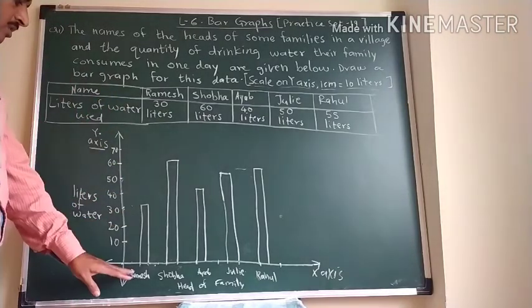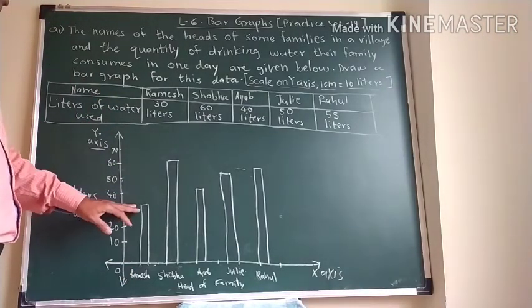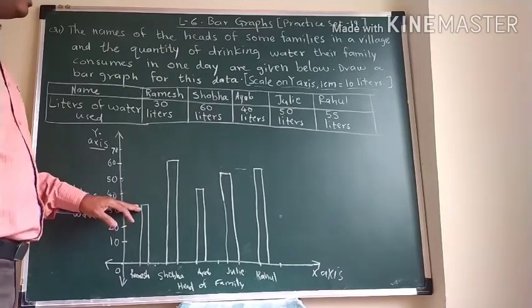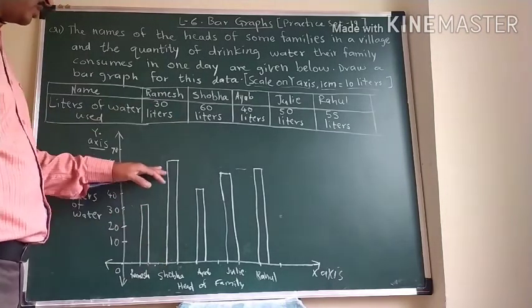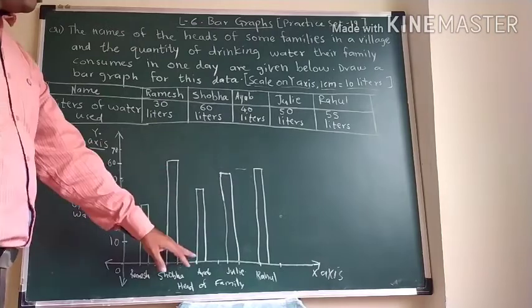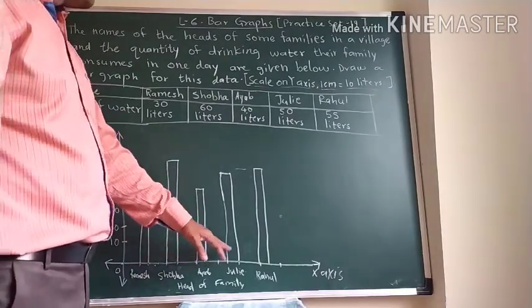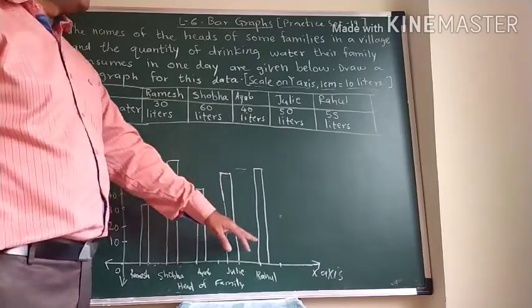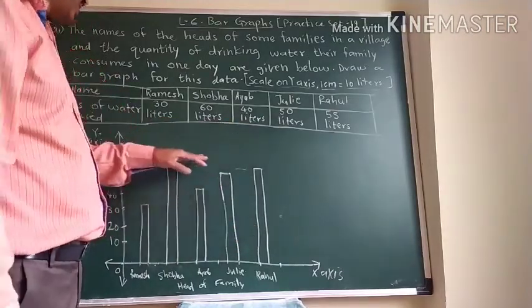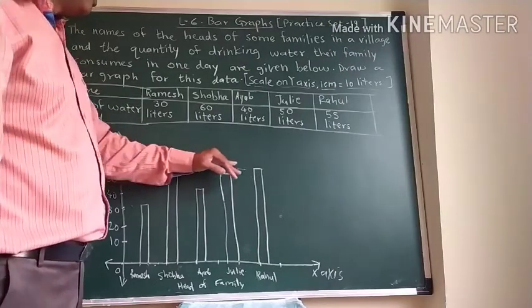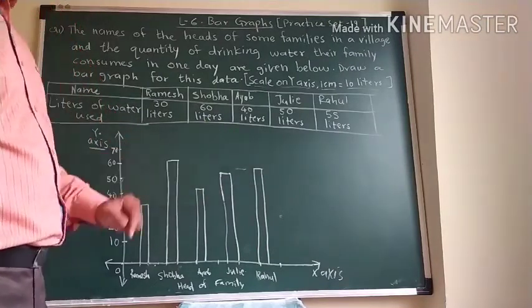Now for Ramesh, we took 30 liters. For Shobha, we took 60 liters. For Ayub, we took 40 liters. For Julie, we took 50 liters. And for Rahul's family, we took 55 liters of water.